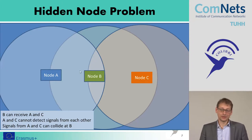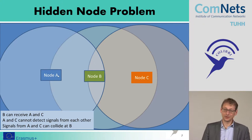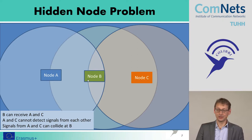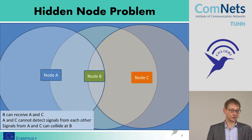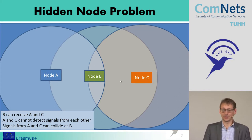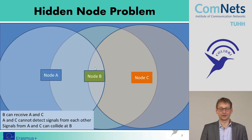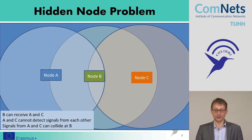There is another problem that can lead to issues: the hidden node problem. We have three nodes. If node A wants to transmit to node B and node C wants to transmit to node B at the same time, node A cannot see what node C is transmitting. Node A senses the carrier, finds it idle, and starts transmitting. Node C, sometime later while node A is still transmitting, receives a packet to send. It senses the carrier but cannot detect node A's transmission, so it also senses the carrier as idle and transmits — causing a collision at node B. This is one of the classic problems in wireless communications.